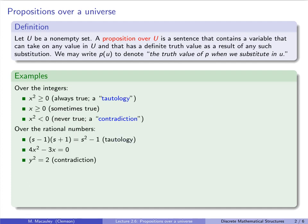Our second example is over the rational numbers — the set of all fractions. Consider the statement (s − 1)(s + 1) = s² − 1. That is certainly true for all rational numbers. It has a definite truth value — it's always true — so it is moreover a tautology.